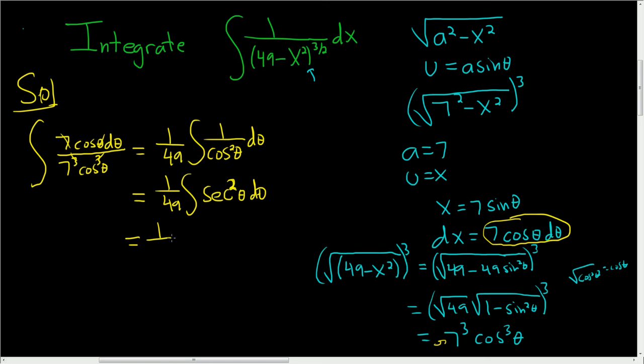Well, that's tangent. So this is 1 over 49 tangent of theta. Then plus a constant.